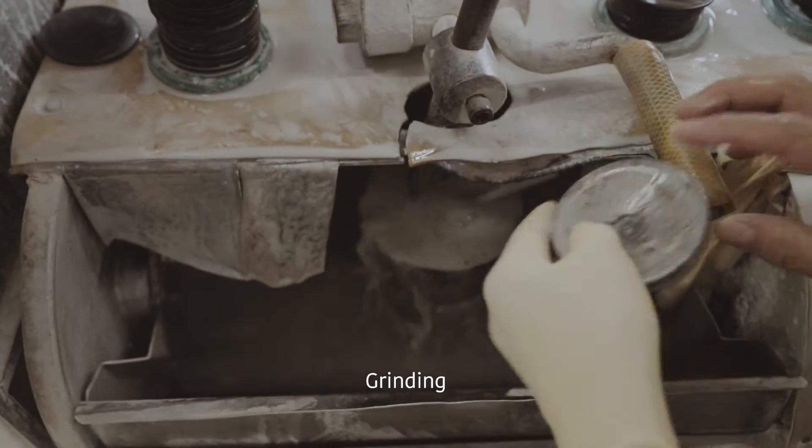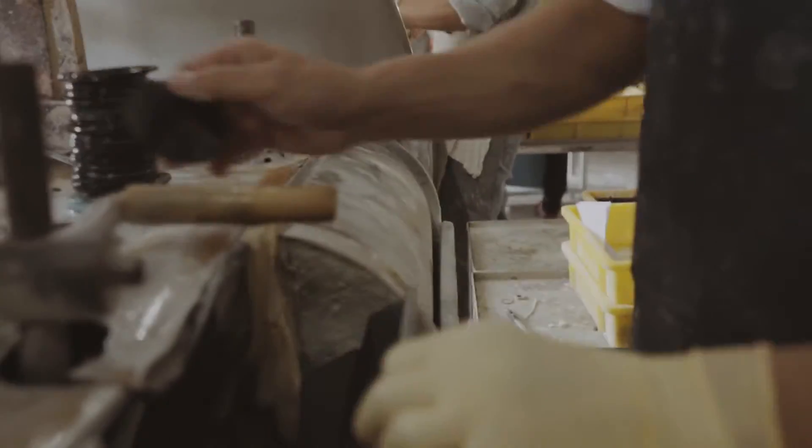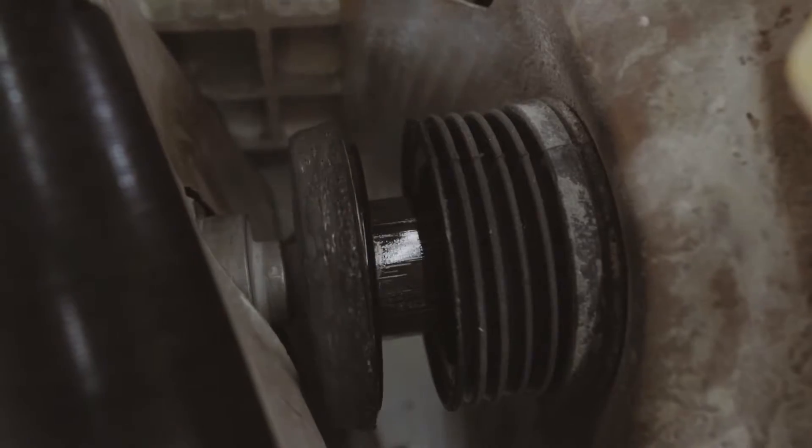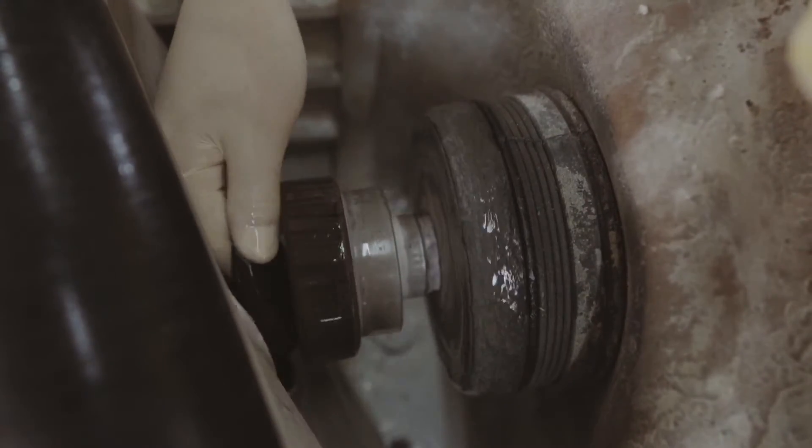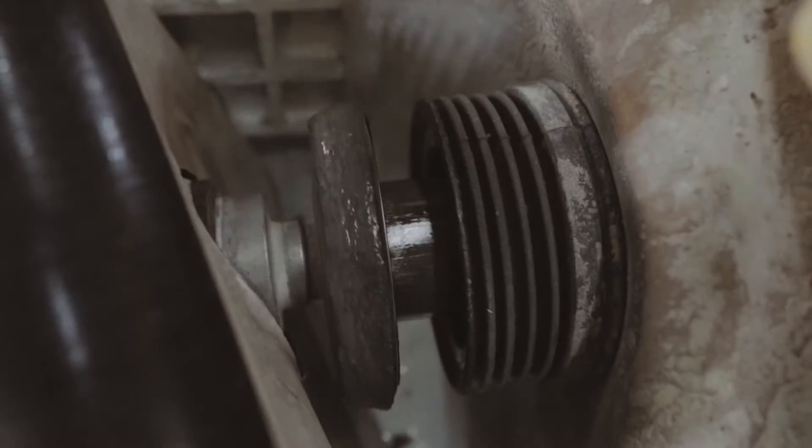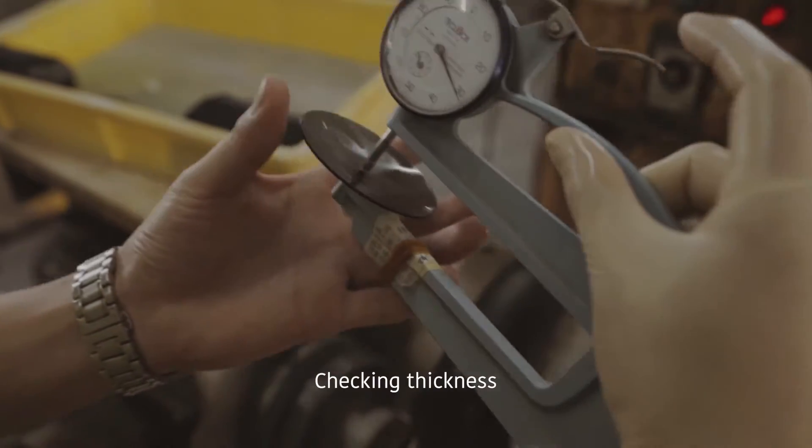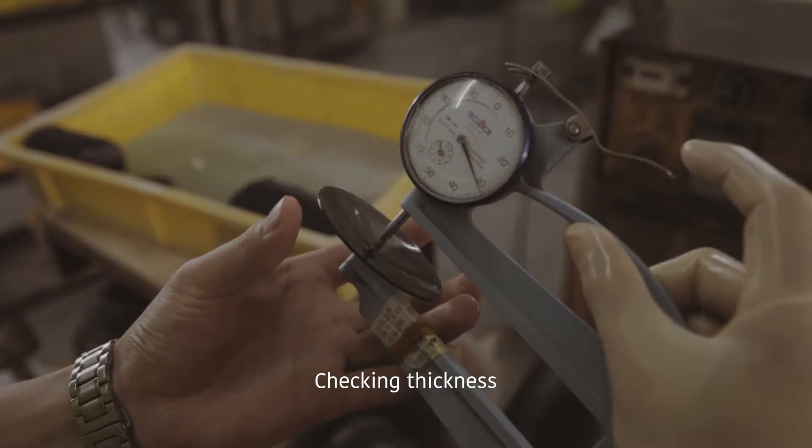Once every mineral glass lens is inspected, they are then placed into grinders where they become smooth and take a more specific shape. The thickness of each puck is then checked with a unique tool to ensure standard size is met.